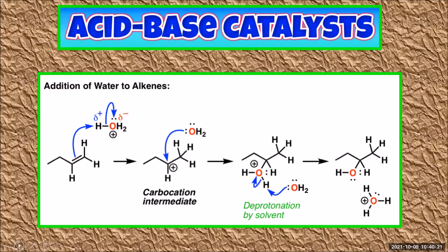What needs to happen in this reaction is that the oxygen from the water molecule needs to come and bond with this carbon here. This produces an intermediate molecule called a carbocation. Now that there is a positive charge, the oxygen end of the water molecule will be attracted to the carbocation, so it's more likely to collide correctly and form a bond.